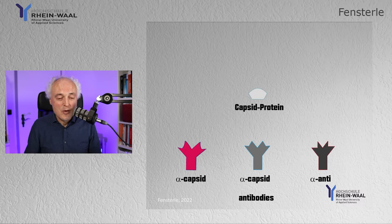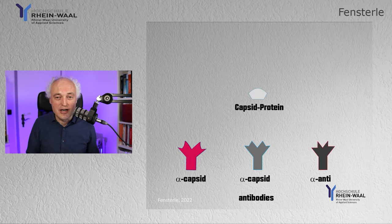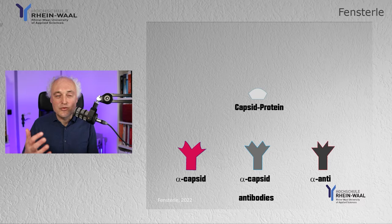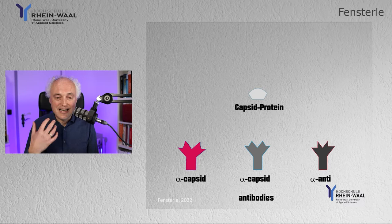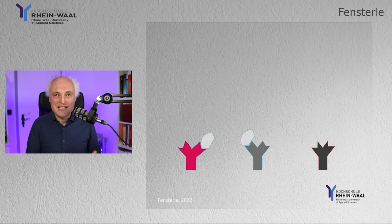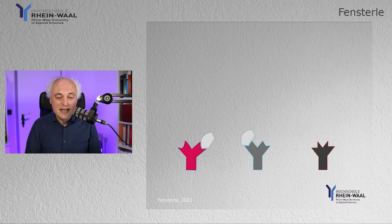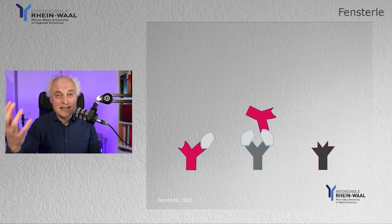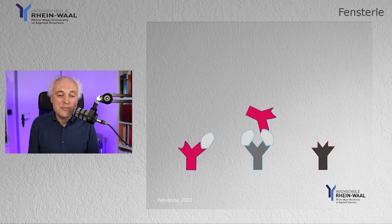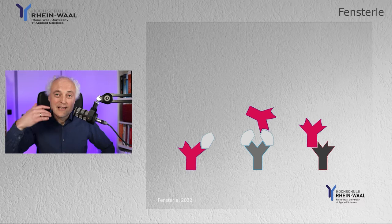We have three different antibodies in the kit. Two antibodies recognize the capsid protein, and one antibody recognizes another antibody. The first antibody is coupled to a red dye so you can see it. Because the two capsid antibodies recognize different regions of the capsid, the gray anti-capsid antibody can bind the capsid even when the red antibody is already bound. The third antibody simply captures other antibodies.